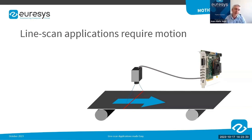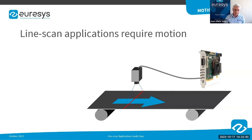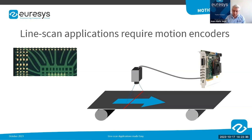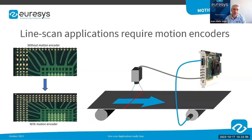Back to our subject — the line scan application. A line scan camera outputs one line at a time, so the reconstruction of a 2D image implies motion. Typically it is the object or the web which is moving under the camera. To avoid deformation due to speed variation, line scan applications usually rely on motion encoders to synchronize the acquisition line rate of the camera with the speed of the object.